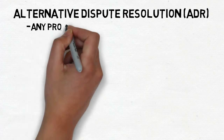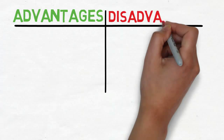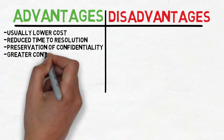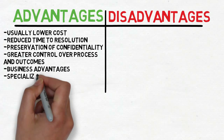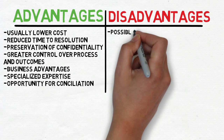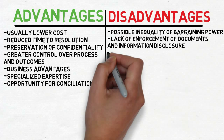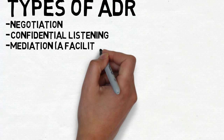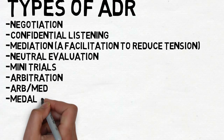Alternative Dispute Resolution, or ADR, is any process used to resolve a dispute outside of litigation. Advantages include lower cost, reduced time to resolution, preservation of confidentiality, greater control over process and outcomes, business advantages, specialized expertise, and opportunities for conciliation. Disadvantages include possible inequality of bargaining power, lack of enforcement of documents and information disclosure, possible lack of finality, enforcement challenges, and fewer safeguards on the process. Types of ADR include negotiation, confidential listening, mediation, neutral evaluation, mini-trials, arbitration, R-Med, and MEDALOA — mediation and last-offer arbitration.